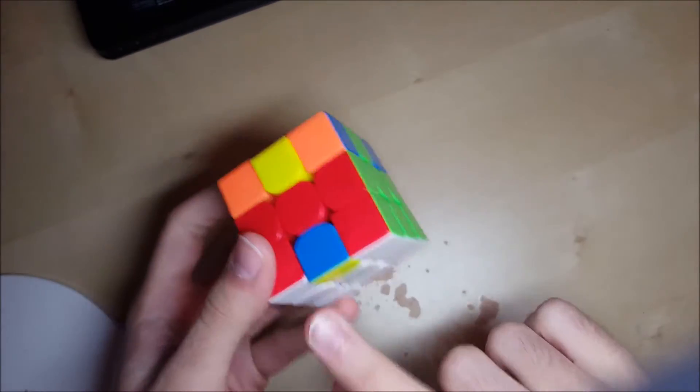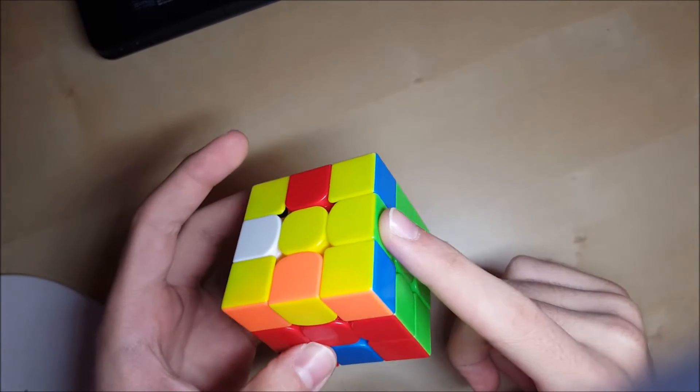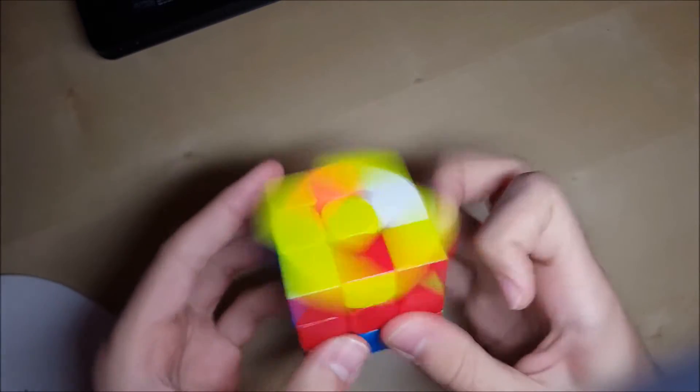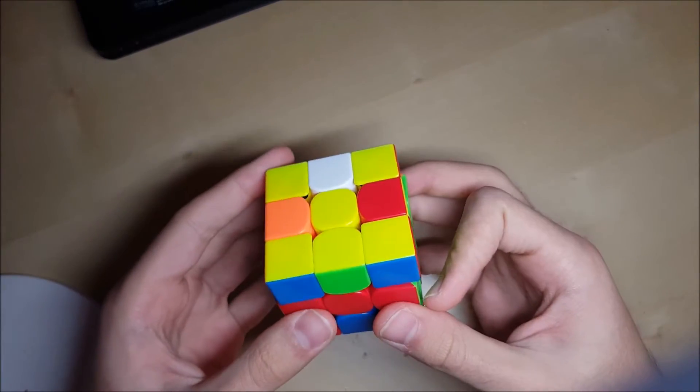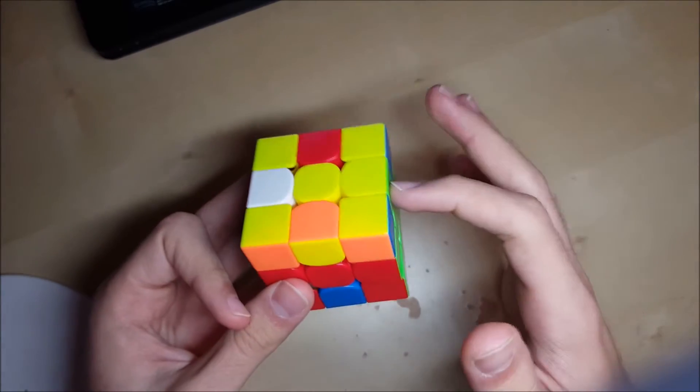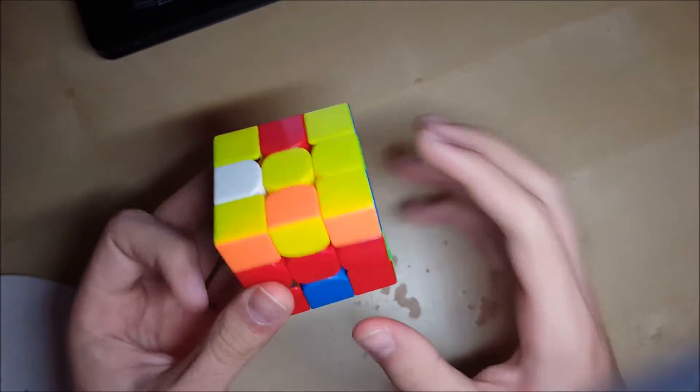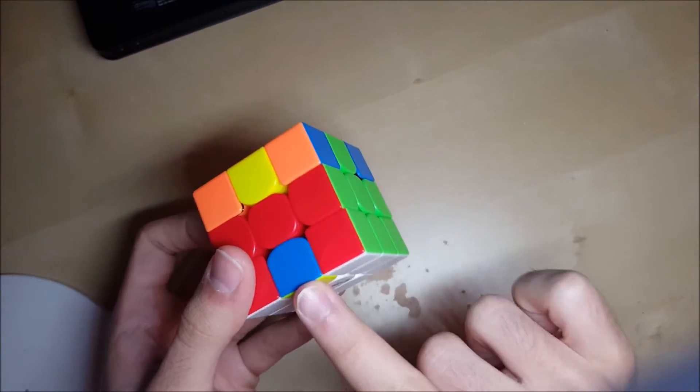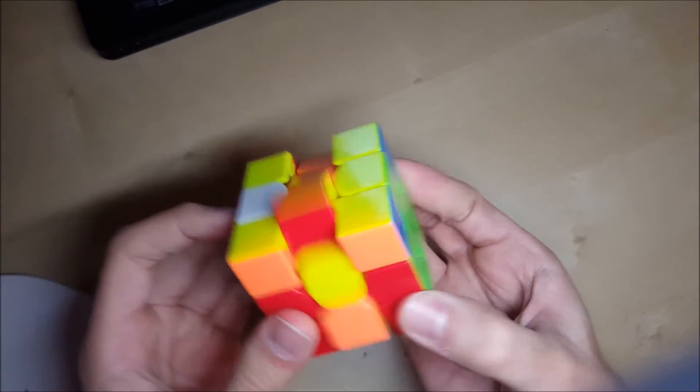So when we have one of the arrow edges on the bottom and the other one oriented on the top, so there or there, you're going to AUF to put this on the side. And then you're going to keep this on the bottom, so we'll do M.